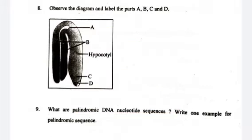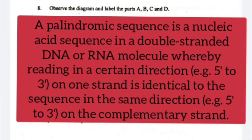Question 9. What is a palindromic DNA nucleotide sequence? Write one example for palindromic sequence. Answer: A palindromic sequence is a nucleic acid sequence in a double-stranded DNA or RNA molecule whereby reading in a certain direction on one strand is identical to the sequence in the same direction on the complementary strand.